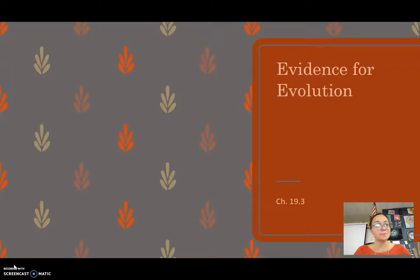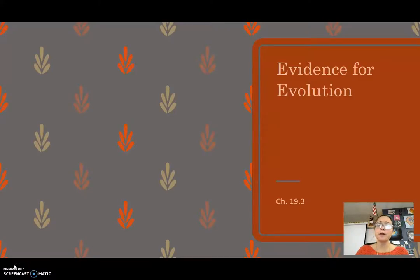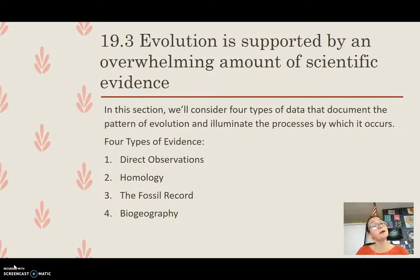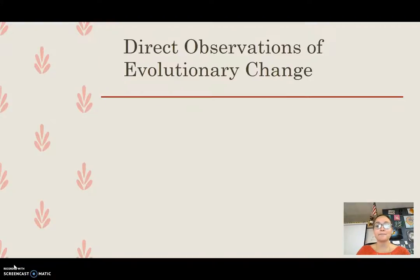Here we're looking at the second part of chapter 19. The first part was natural selection and Darwin, and now we're looking at the evidence for evolution. In the first part you made four boxes, and in the second part you're going to continue and do four more boxes. We're going to look at four pieces of evidence for evolution: direct observations, homology, fossil record, and biogeography. As we go through the video, go ahead and make notes in each of those boxes.